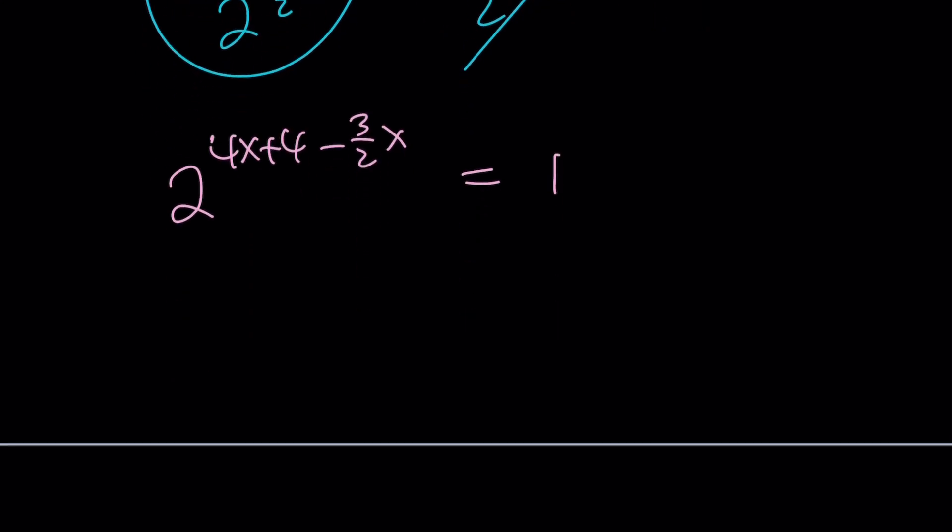Here, we don't have that luxury of multiplying everything by 2. We kind of do, but I don't want to do it. Let's make a common denominator and write this as 8x plus 8 minus 3x, which is going to be 5x plus 8. And then that's divided by 2. And then that is equal to 1.